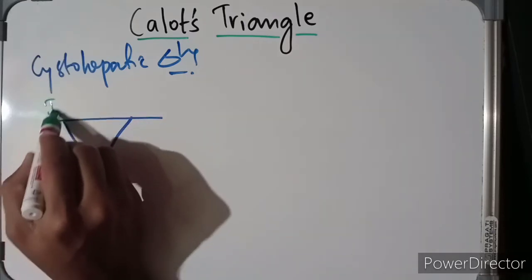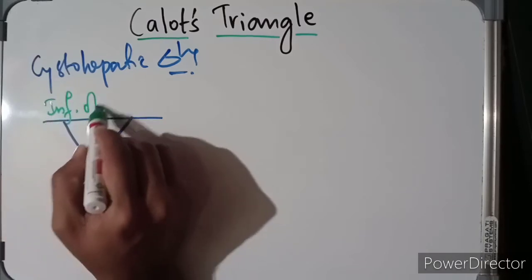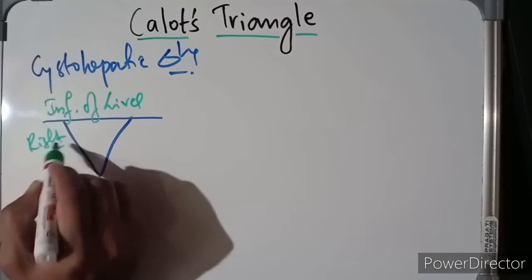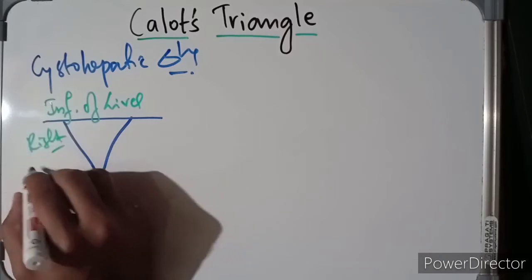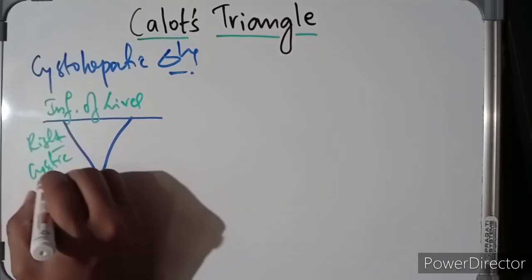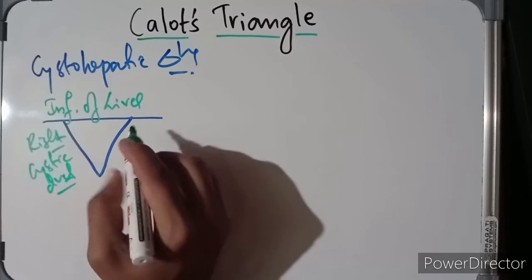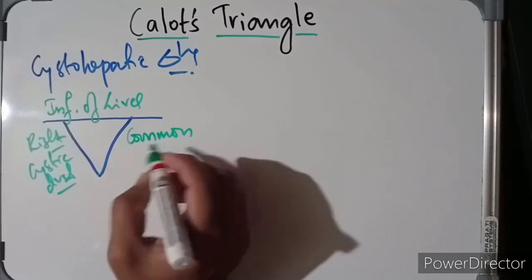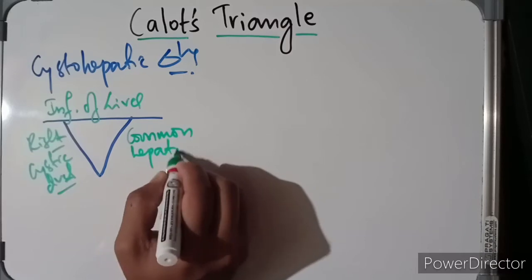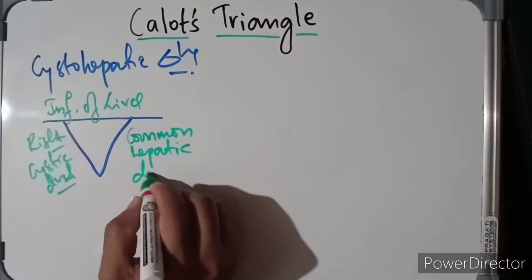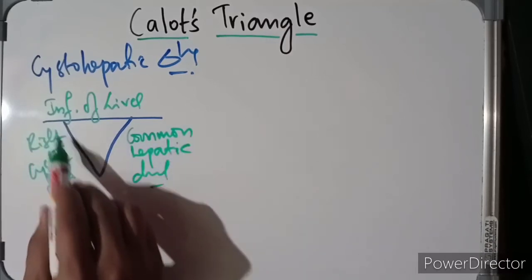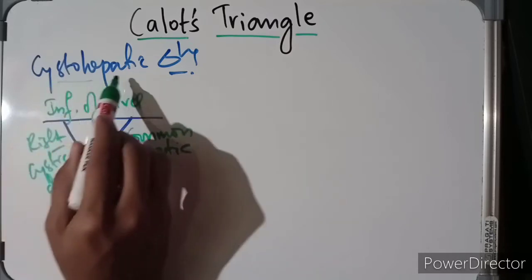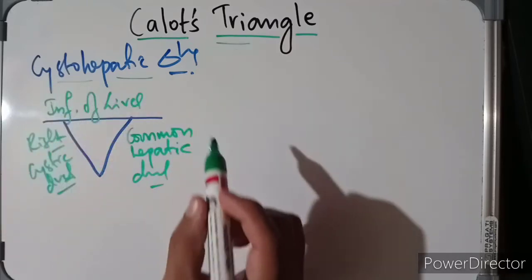The base is formed by the inferior surface of the liver, the right side is formed by the cystic duct from the gallbladder, and the left side is formed by the common hepatic duct. This forms a triangle known as the cystohepatic triangle or Calot's triangle.